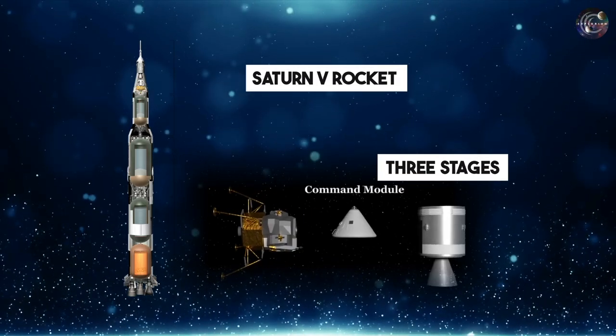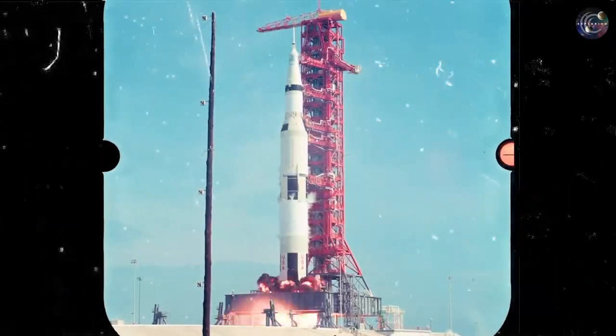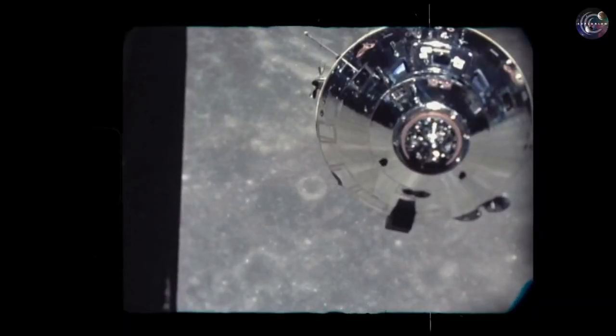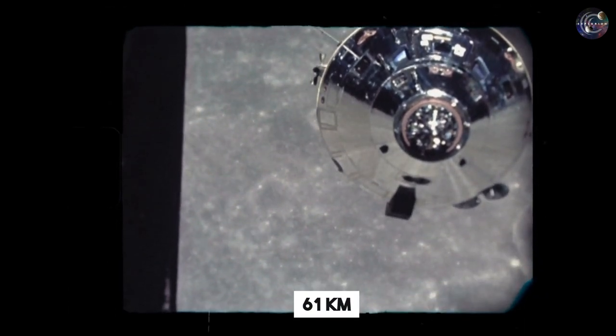The Saturn V rocket had three stages. During the launch, the first stage fired for nearly two and a half minutes, delivering astronauts to an altitude of 61 kilometers.